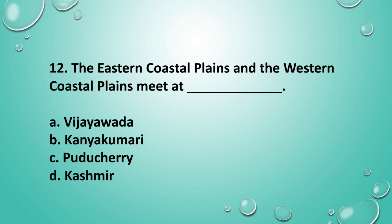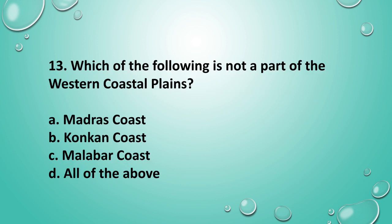Question 12: The eastern coastal plains and the western coastal plains meet at ___. The answer is option B — Kanyakumari.